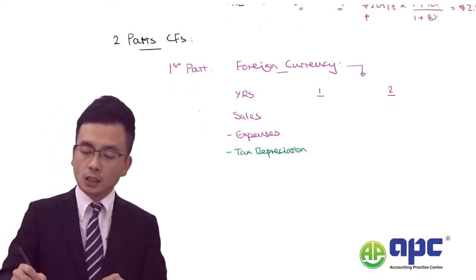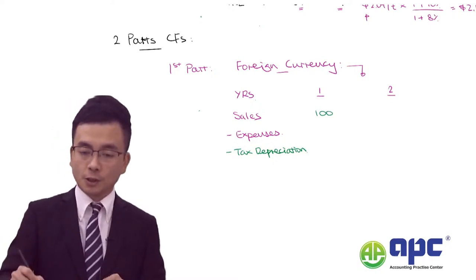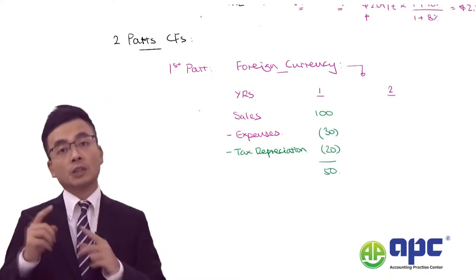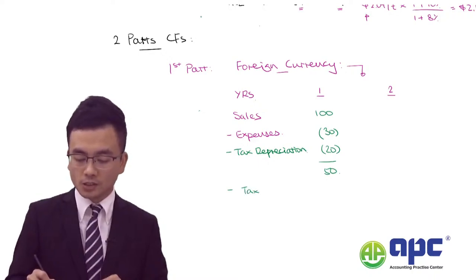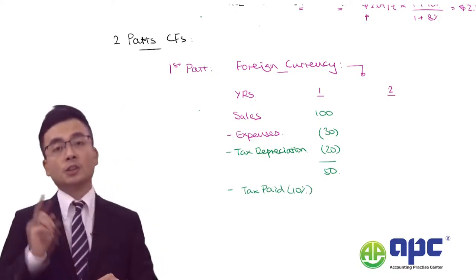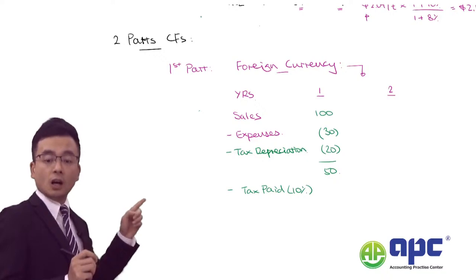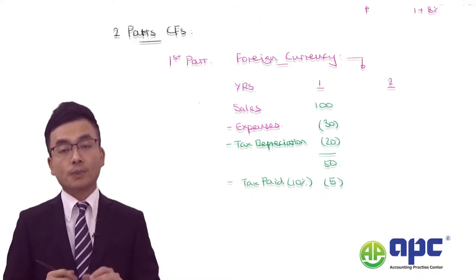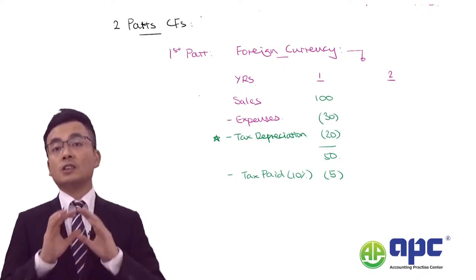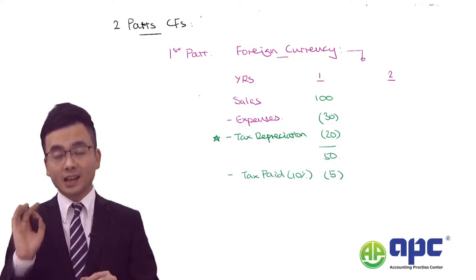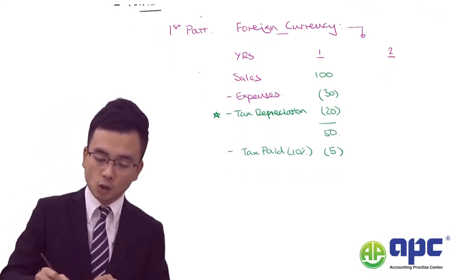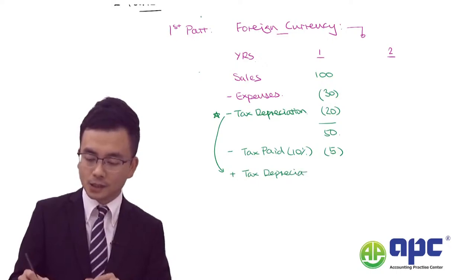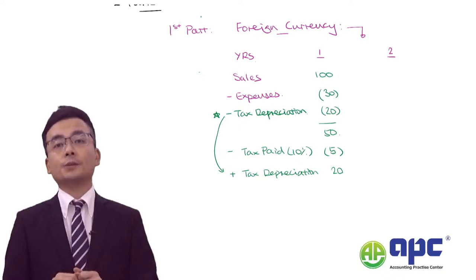Assuming 10% tax, that is 10% times the taxable profit of $50, giving $5 tax paid. Tax depreciation is a non-cash element, so we cannot subtract it in the NPV calculation — we need to add it back at $20. The examiner may also ask about tax losses that can be carried back to enjoy a tax benefit. After considering the first part of the cash flows, the second part is always denominated in our own currency.